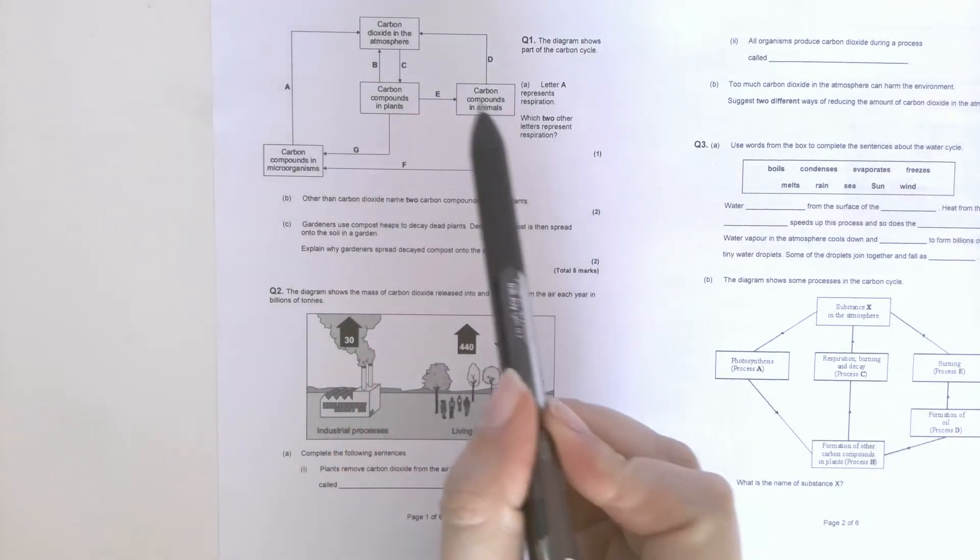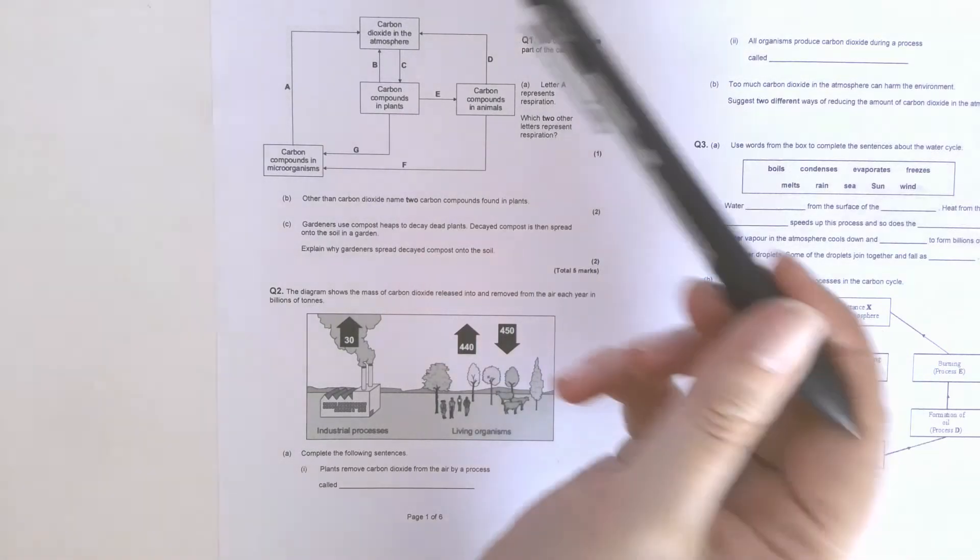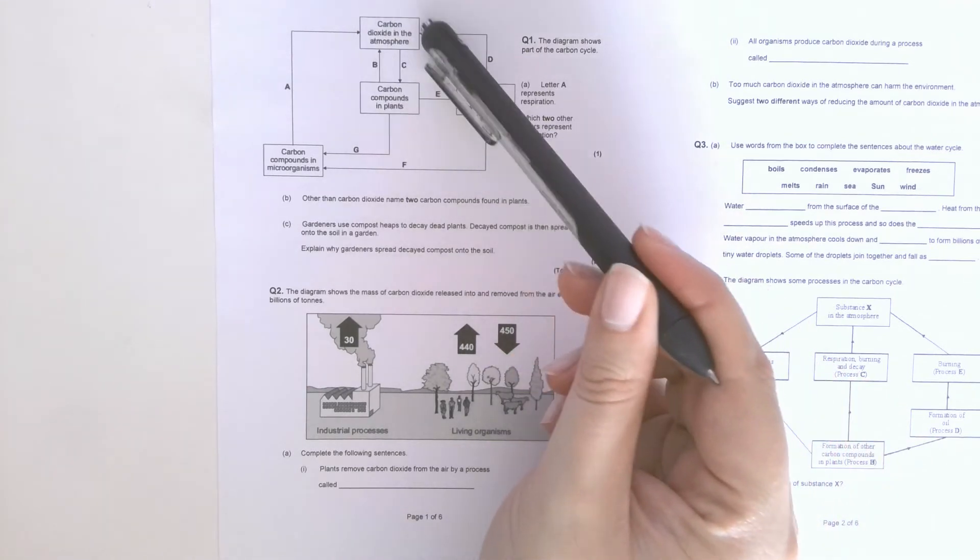So start off, you have a diagram. Now the thing with carbon cycle diagrams is they never look quite identical to each other, so you've got to find a point where you're quite confident that you know. And I would go with carbon dioxide in the atmosphere and go from there.